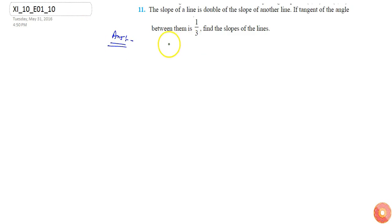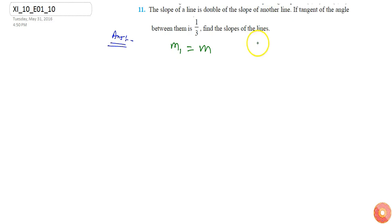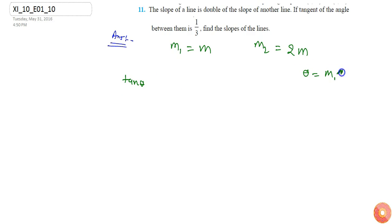In this question, let's say the slope of the first line is m1 equals to m. It is given that the slope of the second line is double the slope of another line, so the slope of the second line will be 2m. The tangent of the angle between them — tan θ — is given as 1/3, where θ is the angle between m1 and m2.